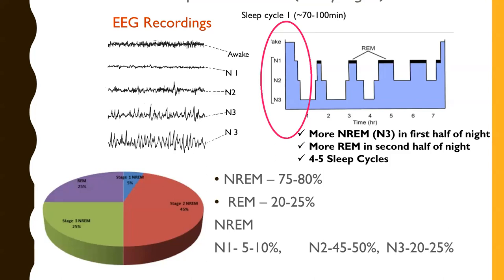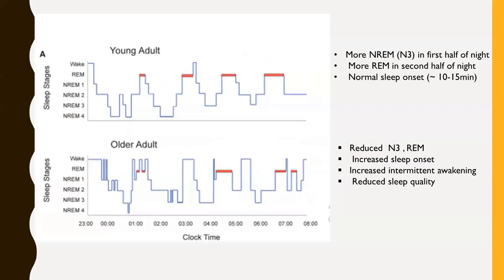N3 varies with age — it gradually starts reducing and there is an increase in sleep onset latency. In older individuals, it takes more time to get into sleep. This is called sleep onset latency, which goes on increasing. There are also a lot of intermittent awakenings with aging. These two factors are determinants of sleep quality, and therefore there is reduced sleep quality with aging, with increased intermittent awakenings being one important factor.